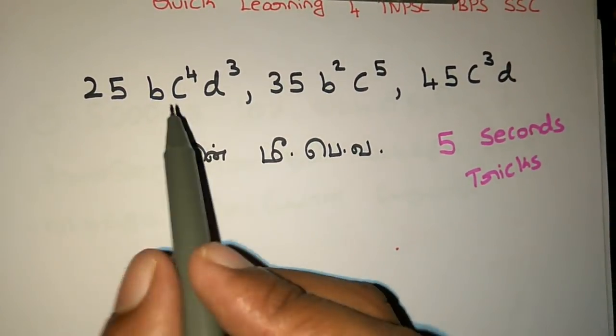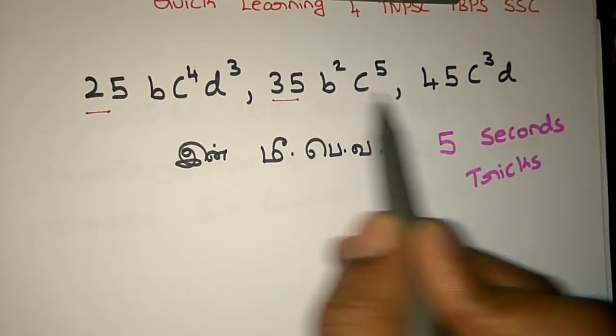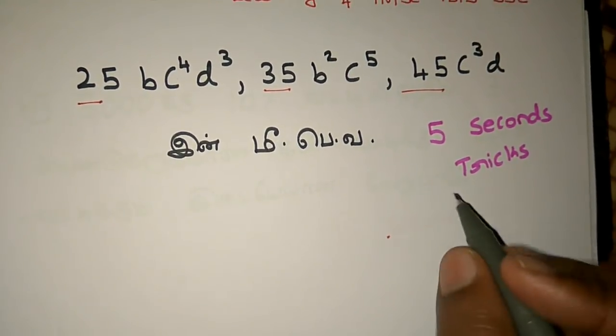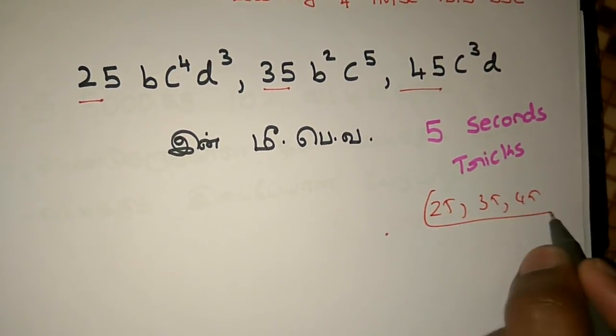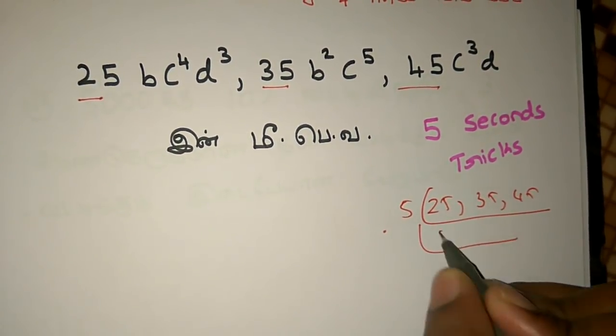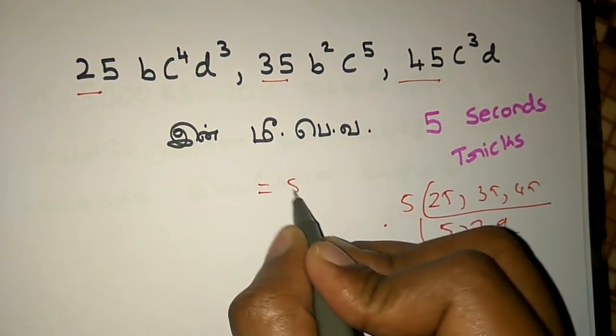We can get values for B, C. From the numbers 25, 35, and 45, we can get 5. So 5 is equal to 5.